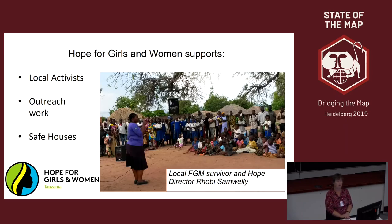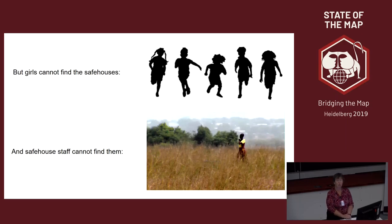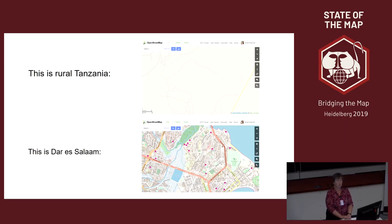Robie was cut against her will when she was 13, nearly bled to death. Now she does outreach work telling people about the dangers of FGM. Her work was really hampered by the fact that she didn't have access to maps of the surrounding area. She organizes two safe houses, but girls couldn't find the safe houses, and safe house staff and the police can't find the girls. Much of rural Tanzania still looks very unmapped, whereas places like Dar es Salaam are extremely well mapped, particularly through initiatives like Ramani Huria.